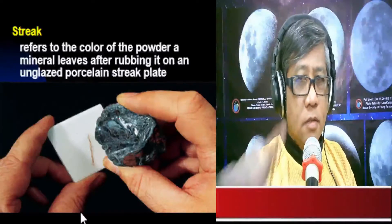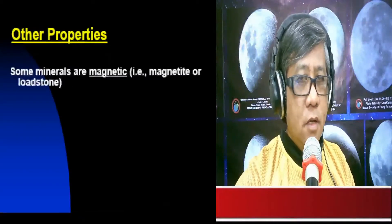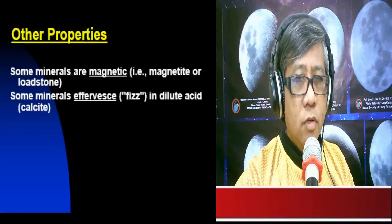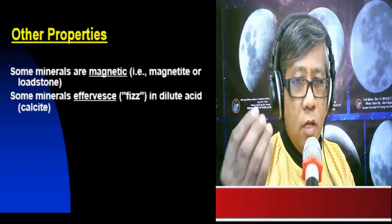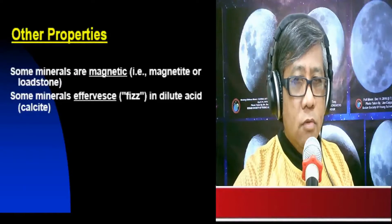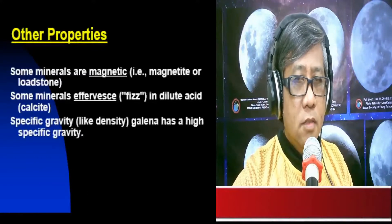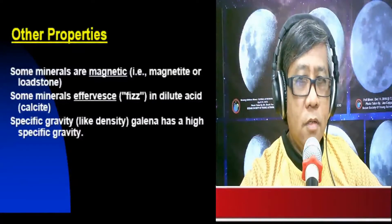Some minerals exhibit special properties such as magnetism — for example, magnetite or lodestone. Some minerals also exhibit effervescence or fizzing in dilute acid; calcite fizzes when placed in dilute acid solution. Mineralogists also consider specific gravity, like density, in identifying minerals — for example, galena has a high specific gravity.